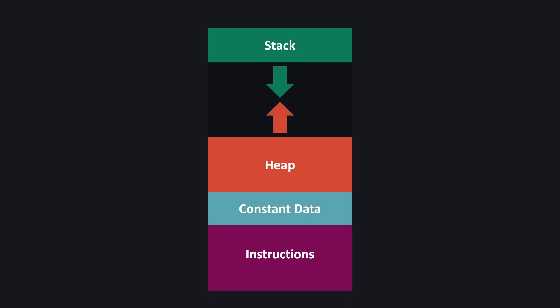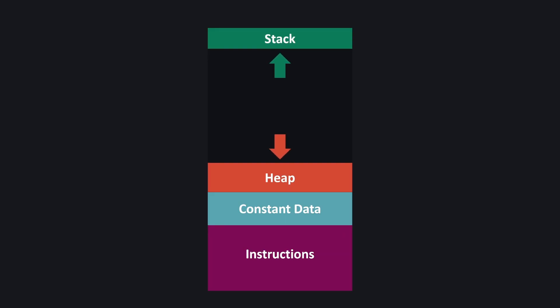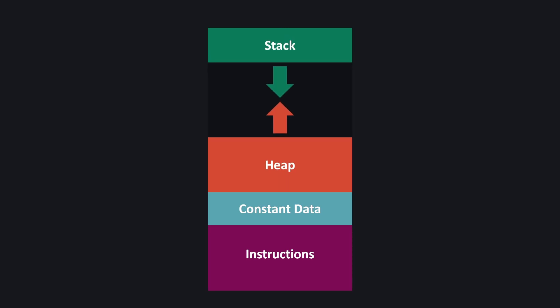The stack grows downwards towards the heap, whereas the heap grows upwards. Since resources are finite, you don't want your process to continue growing in its memory consumption. You want some mechanism to reduce the memory usage of your process as it no longer needs previously allocated memory. Often during execution the stack and the heap will grow and shrink depending on fluctuations in memory requirements. The main difference between these two regions is how we allocate and deallocate space within them.